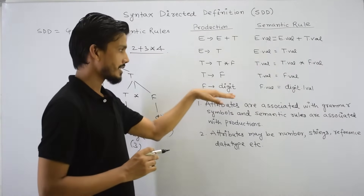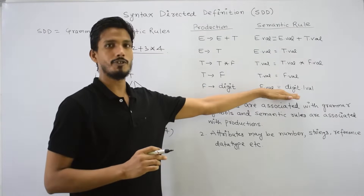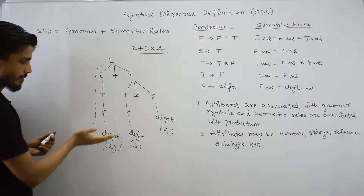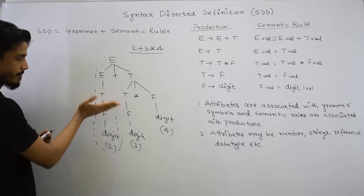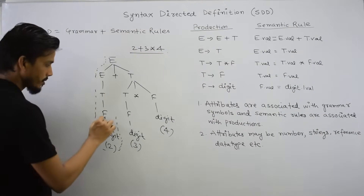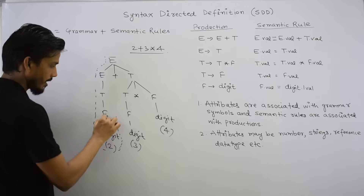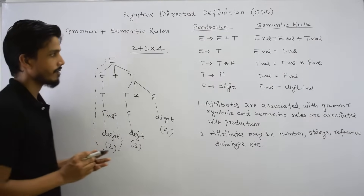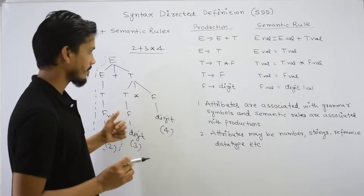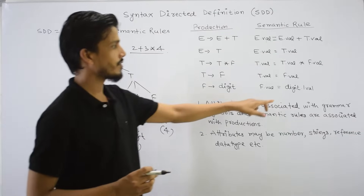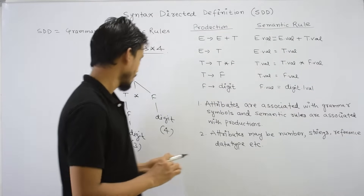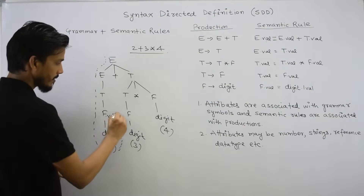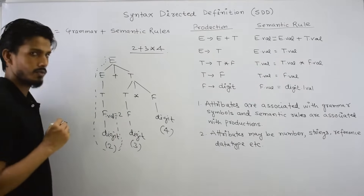When we have a reduction, the corresponding value is the action. To perform a reduction — if we reduce digit to capital F, then f.val is equal to digit.lexval. So here, the digit's lexical value is 2. What value will be 2?